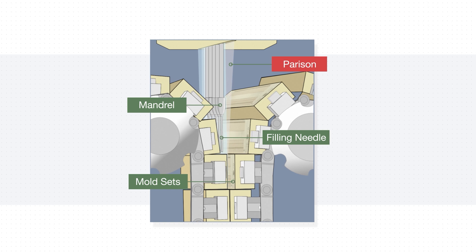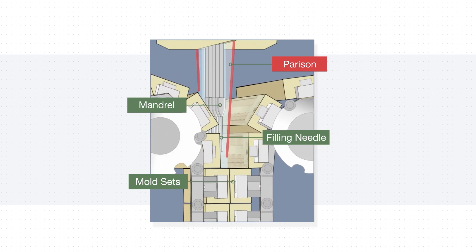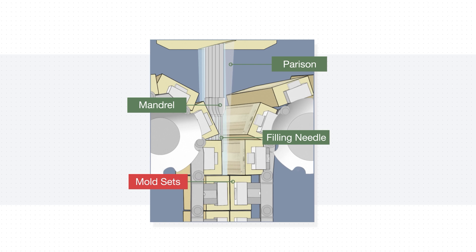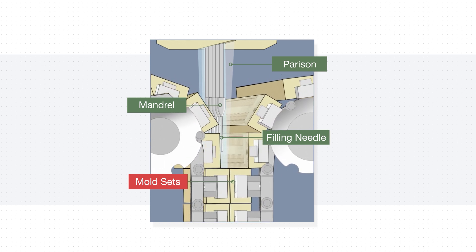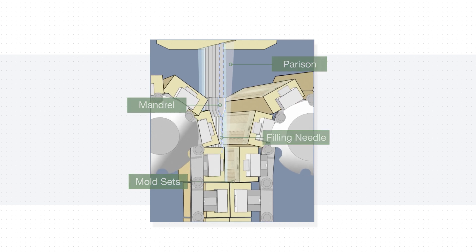First, the mandrel is surrounded by a sheet of hot resin that is waiting to be formed into a BFS container by the BFS mold. To protect the drug product from the heat of the soft resin, the mandrel is cooled with an active loop of cooling fluid.